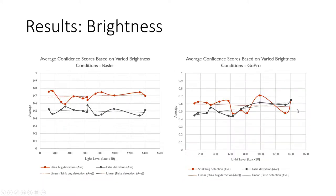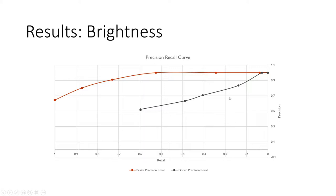With regards to brightness, we see that the Basler's correct detections consistently remain above the incorrect detections, whereas the GoPro starts to show false detections increase as the brightness increases. This can be further seen in the precision-recall curve. Recall refers to the number of stink bugs detected in relation to the number in the scene, whereas precision refers to the number of correct detections in relation to the total number of detections. The Basler completely outperforms the GoPro in this regard.